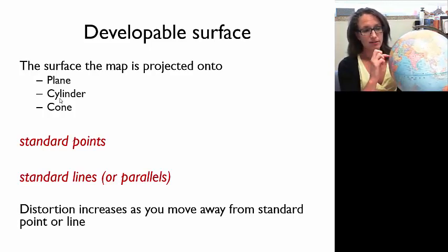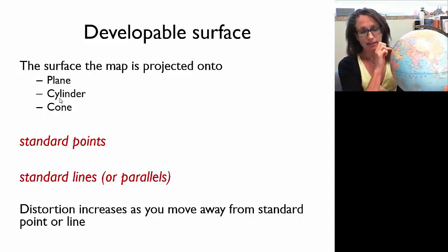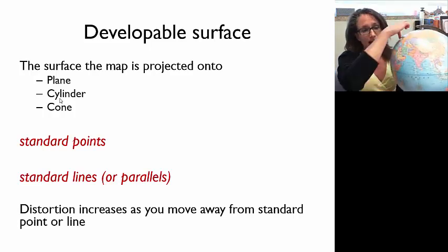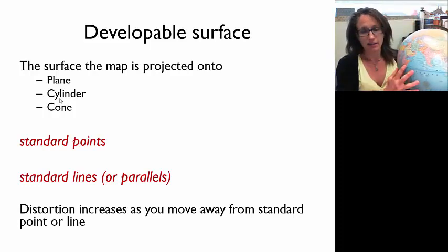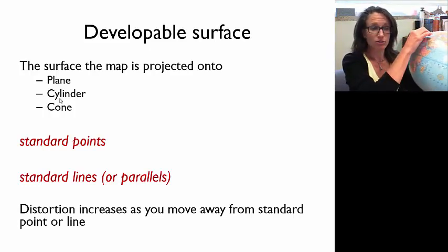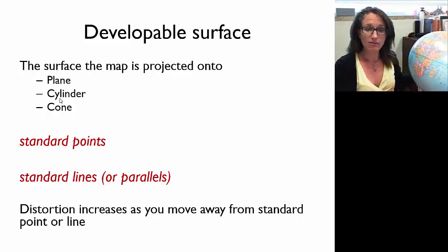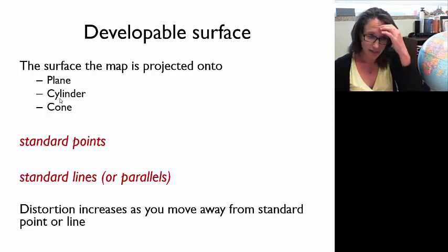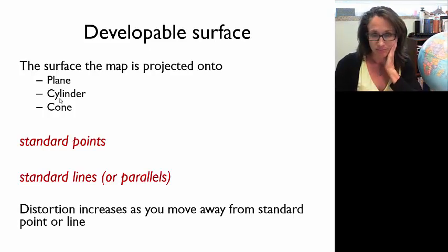If we wrap a cylinder around this, it's going to have a line that is the point of contact, and that's called a standard line. And if it's a cone, it's going to have a line of contact. And that's where you have the least distortion. As far as you move away from that point of contact or that line of contact, distortion increases.